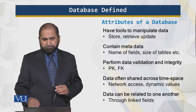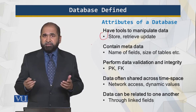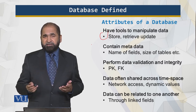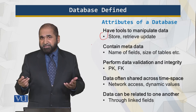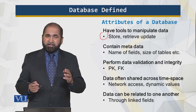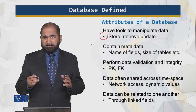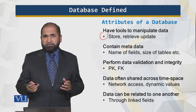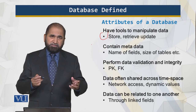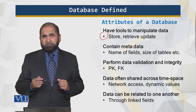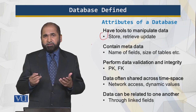More attributes of a database: it has tools to manipulate data — store data, retrieve data, display data, update data. A DBMS provides these tools. The database also contains data about the data itself, like the name of the attributes, the number of tables, the size of the tables — this is called metadata. In a database, data validation is done. Is the data entered unique based upon a certain key called the primary key? Or is the data of a person entered who is a member of a certain club, or a company, or a customer?